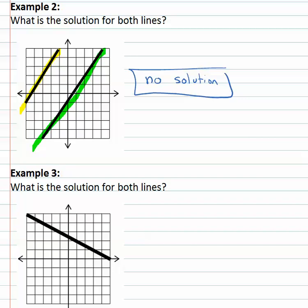Another option, example three, is where we have this yellow line going down and the green line going down right on top of it. Both of these lines are the same line, which means any point that I pick on one line is also a point on the other line.